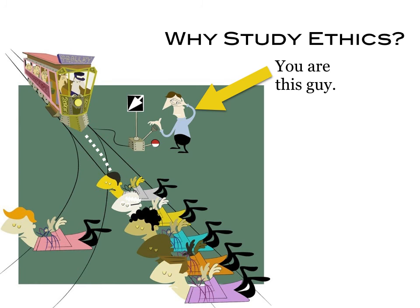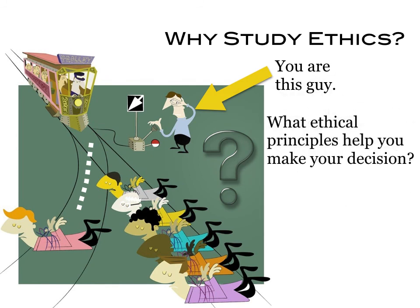You, as somebody who's walking by, have the opportunity to flip the switch, which would make the trolley cart go down another path so that those five lives will be saved. The only problem is that if you flip the switch, there is somebody tied to another track — only one person this time rather than five — and by flipping the switch, you will have saved five lives, but unfortunately one life will perish as a result. So the question is: what is the ethical thing to do, and what ethical principles might help you make this decision?